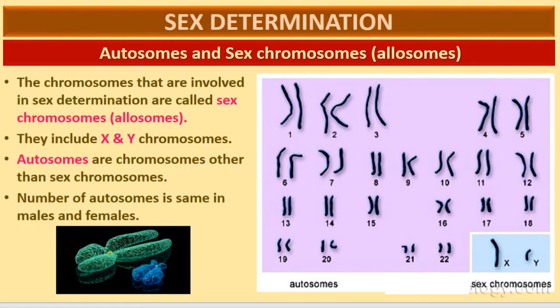The chromosomes involved in sex determination are called sex chromosomes, also known as allosomes. They include X and Y chromosomes. Autosomes are chromosomes other than sex chromosomes; they carry genes for body characteristics and are the same in males and females. This graphical representation of chromosomes — also called a karyotype — shows the sex chromosomes X and Y highlighted. The remaining 22 chromosomes are autosomes, which are similar in both males and females.